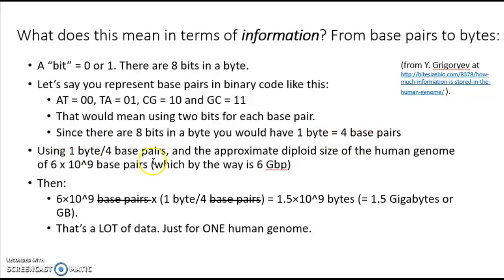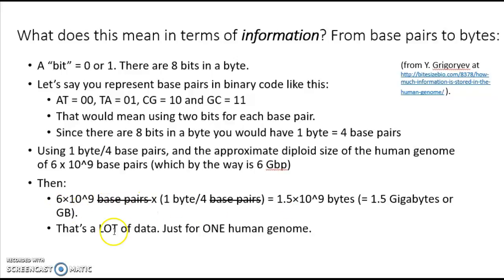Since there are 8 bits in a byte, you would have one byte of computer information representing four base pairs. Using that conversion factor — one byte per four base pairs — and considering the approximate diploid size of the human genome, where you have two copies of each of our 23 pairs of chromosomes, that would entail 6 times 10 to the 9 base pairs, or 6 gigabase pairs. That's the haploid genome in sperm or eggs being 3 billion, but the somatic cell content is 6 gigabase pairs. Multiplying by our conversion factor, an average human genome takes up 1.5 times 10 to the 9 bytes, or 1.5 GB — just plainly a lot of data.